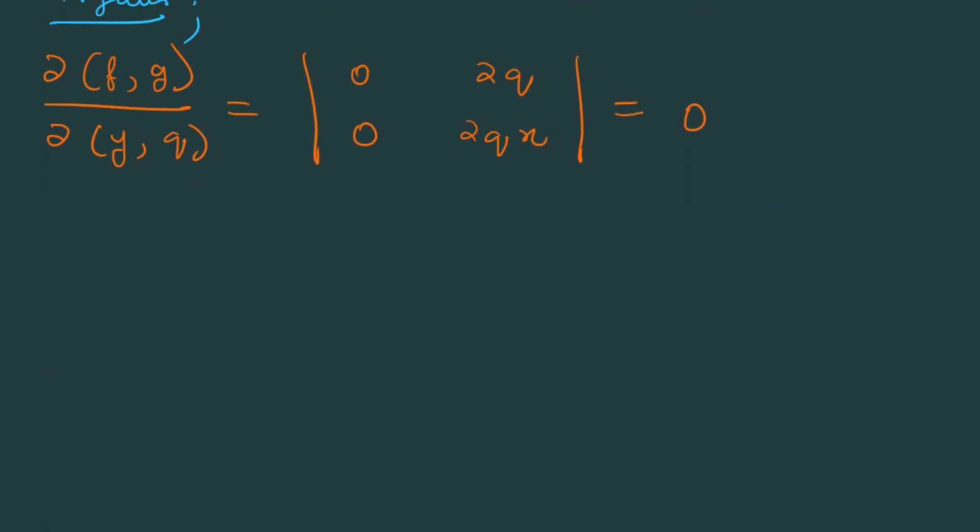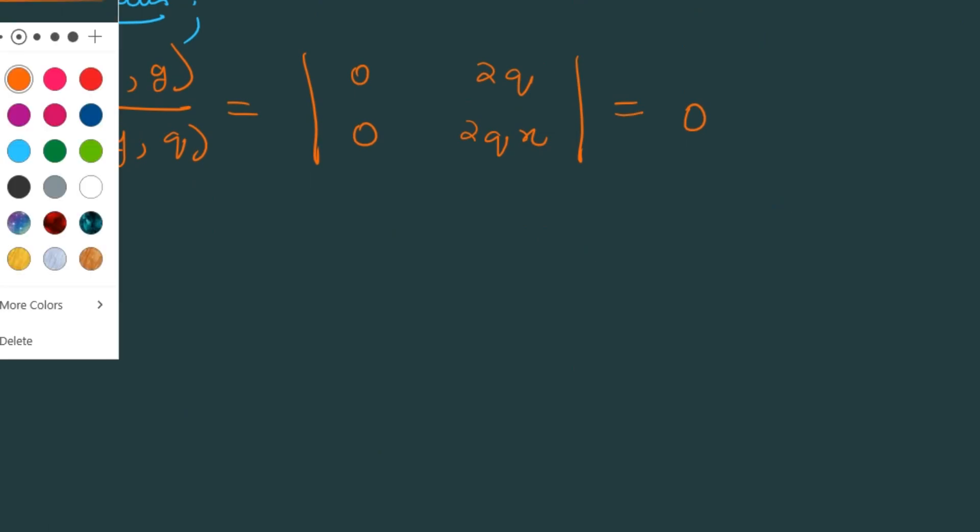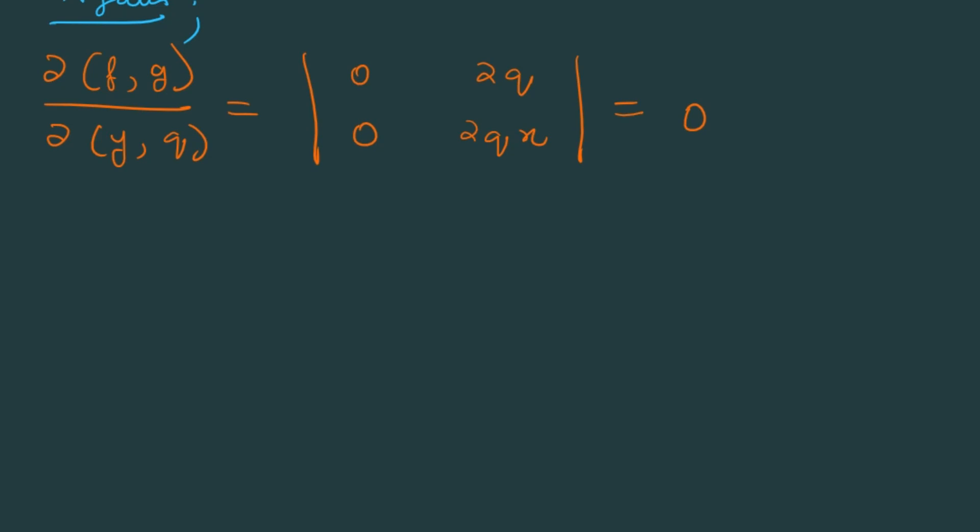One more part is left, that is ∂(f,g)/∂(z,q) will be equal to determinant value |0, -p; 2q, 2qx|. So when you do this you're going to get 2pq.